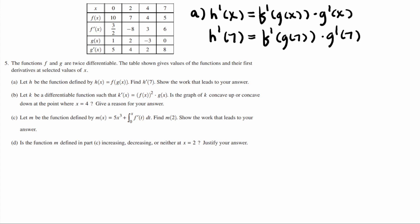And then h prime of 7 will equal f prime of g of 7 times g prime of 7. And I can look up some of these things, like g of 7 is equal to 0. f prime of 0 times g prime of 7 was equal to 8. So this is equal to f prime of 0 was 3 halves times 8. And you can call that 12 if you want, but you can just walk away with 3 halves times 8 because that's an equivalent representation.